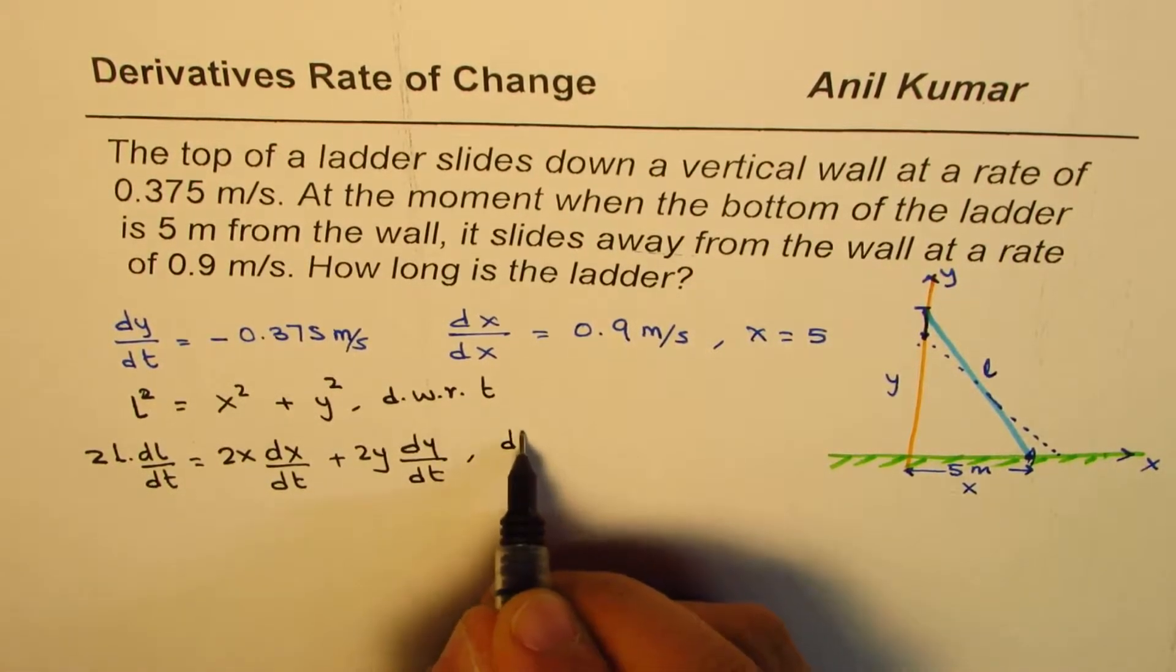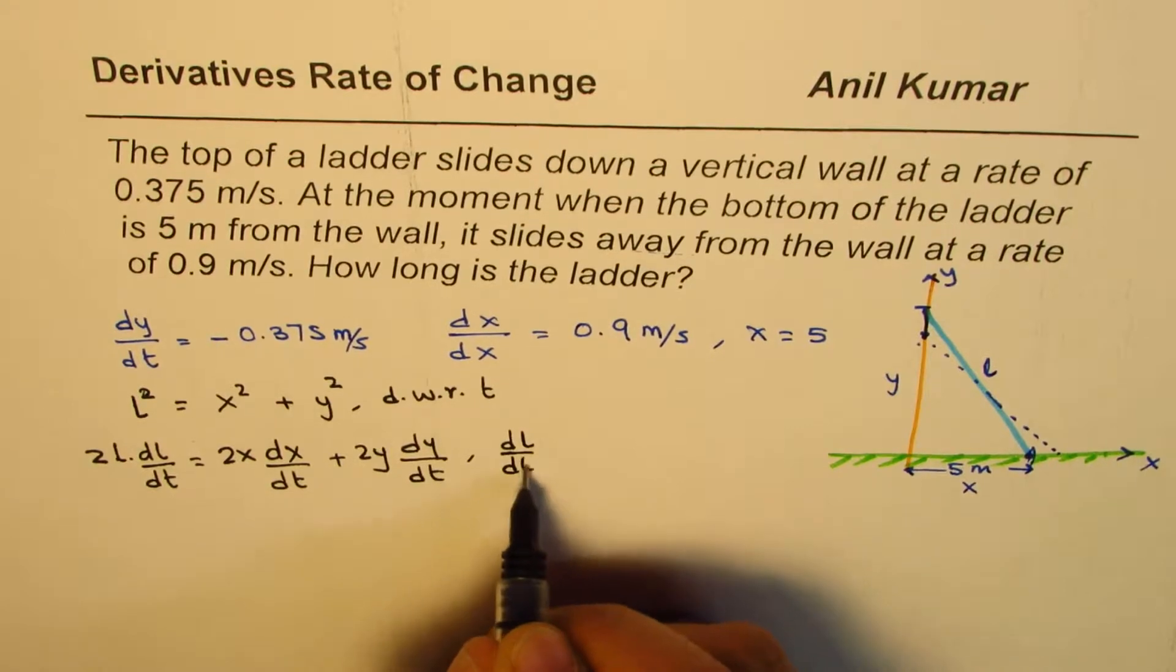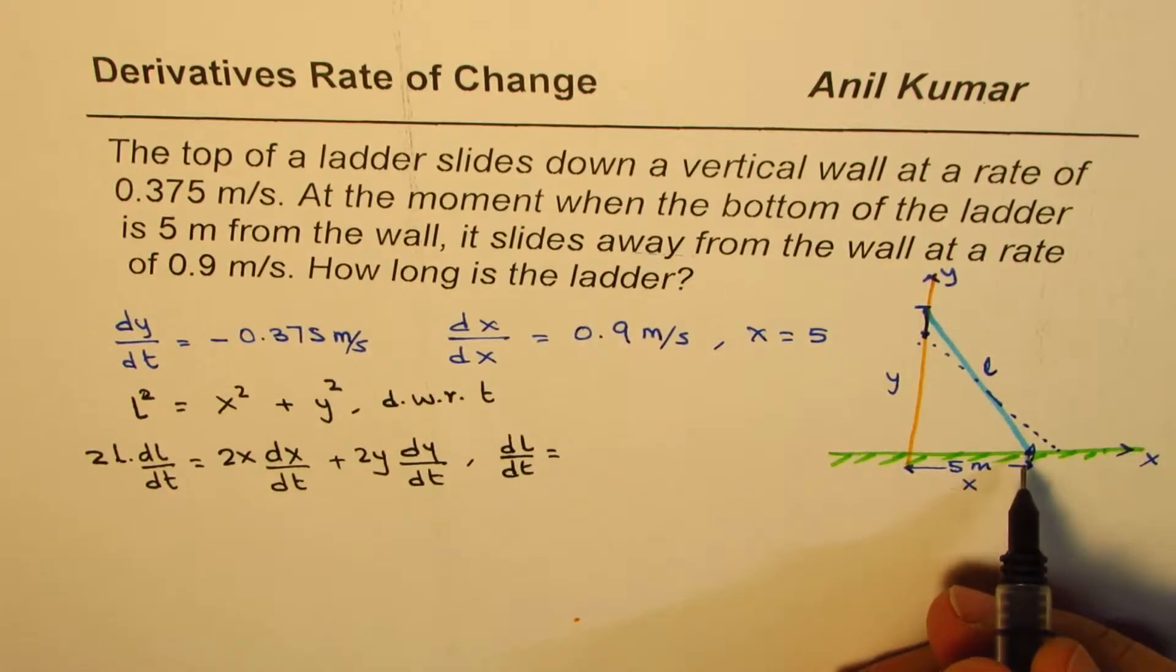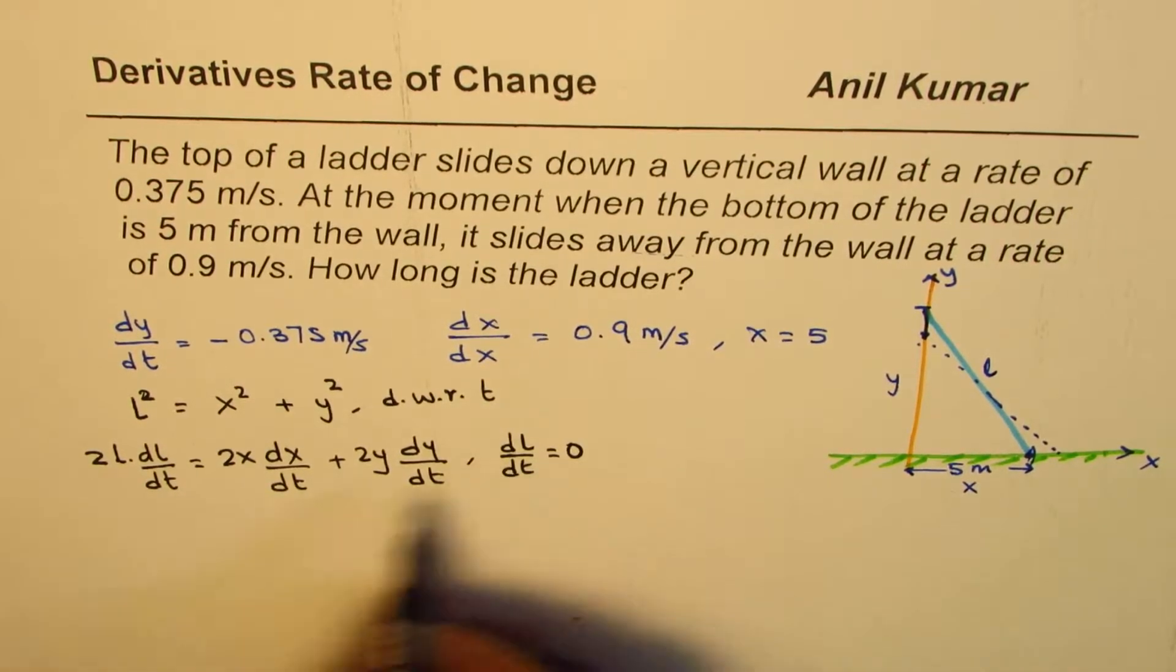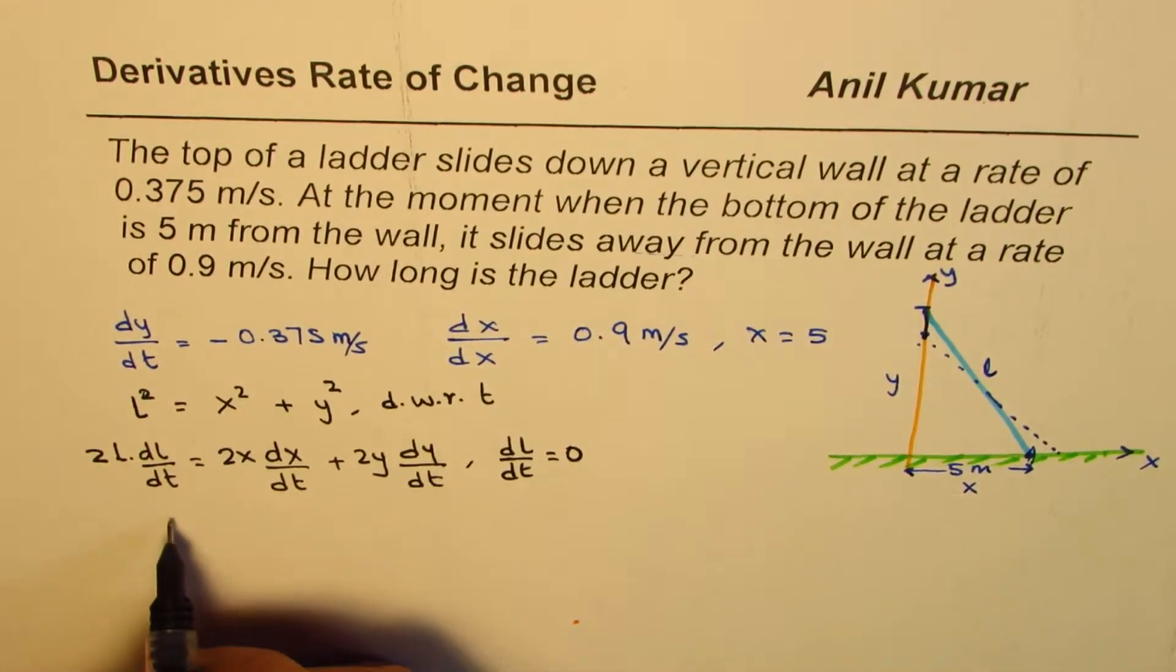Now what is dL/dt? Since the length is fixed, it is not changing with time, dL/dt is 0, right? Since dL/dt is 0, we do get...